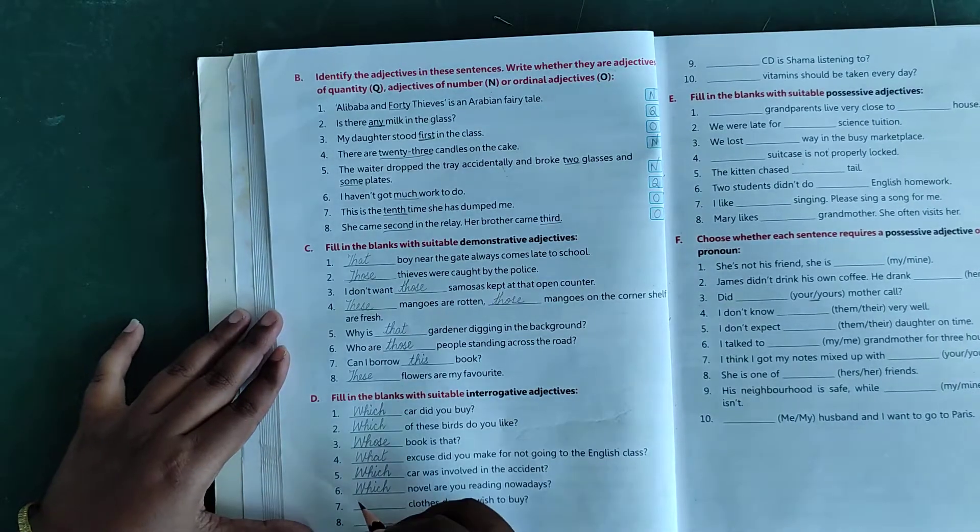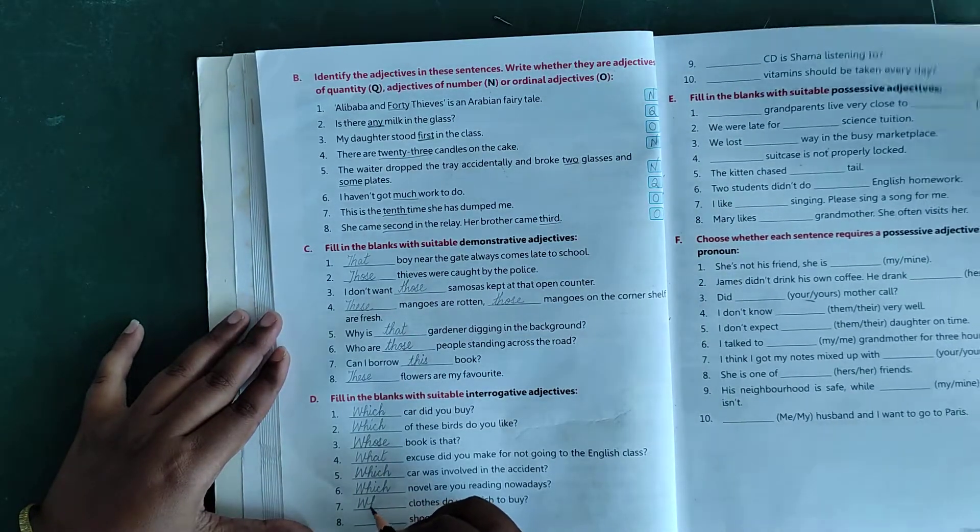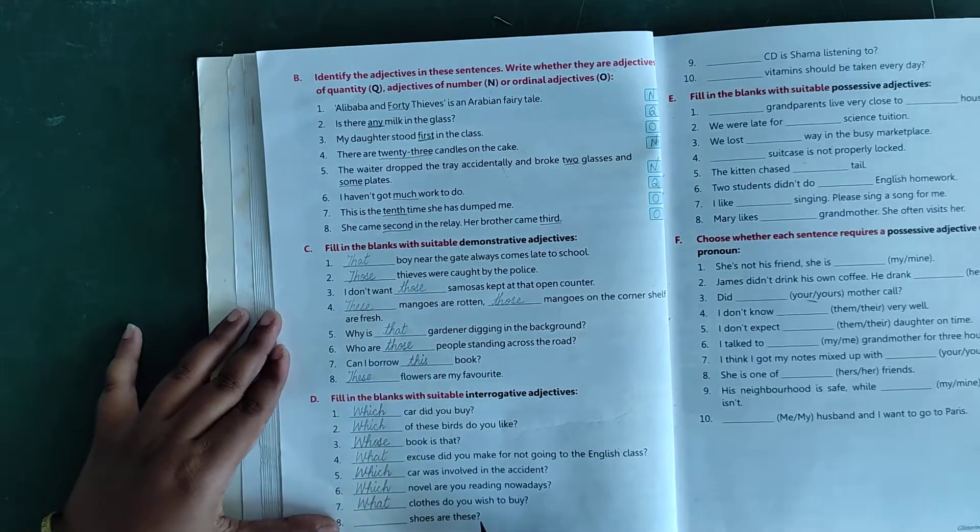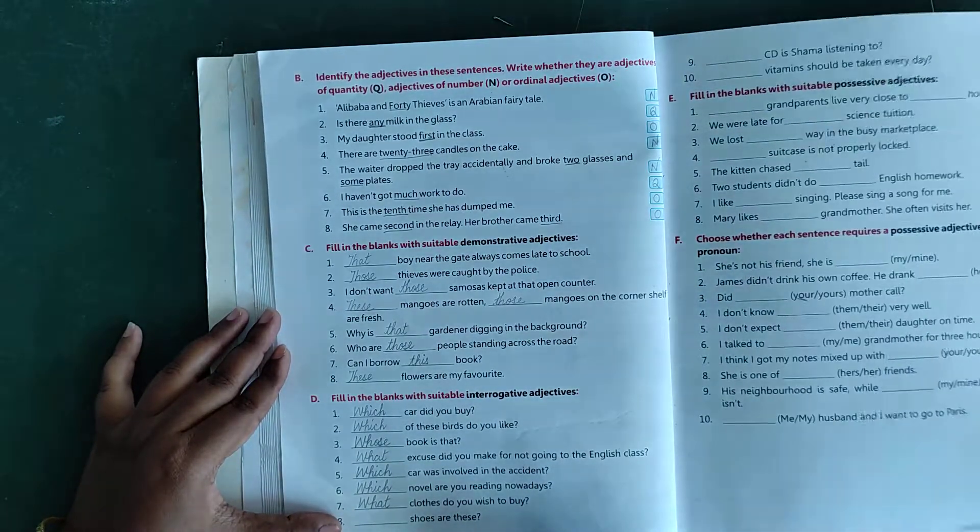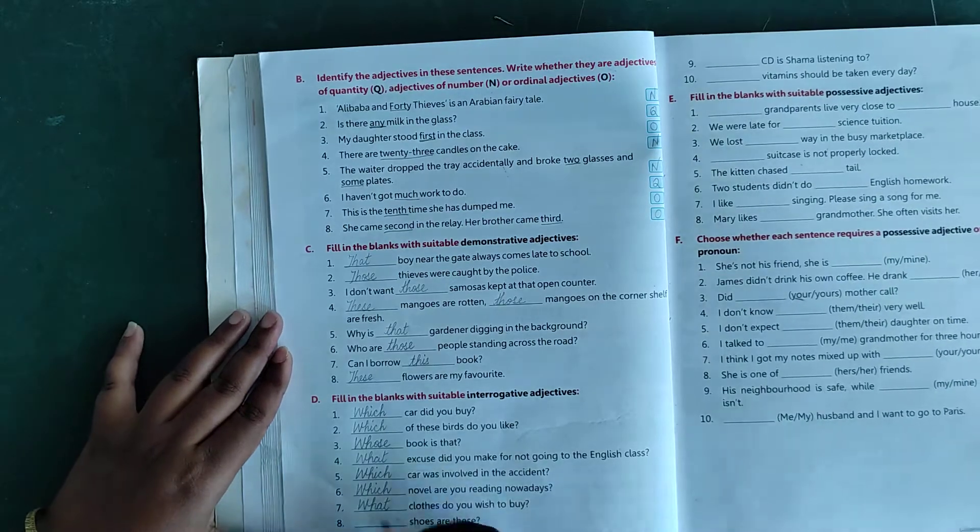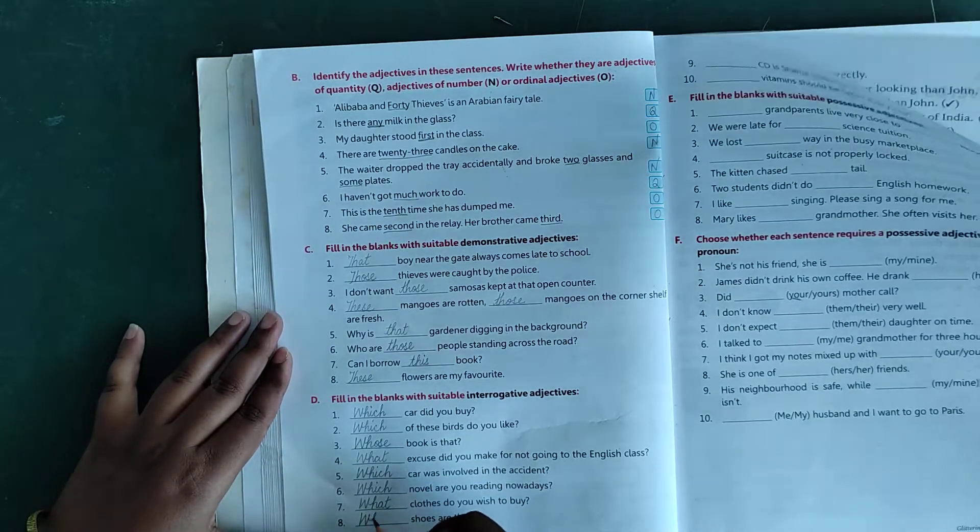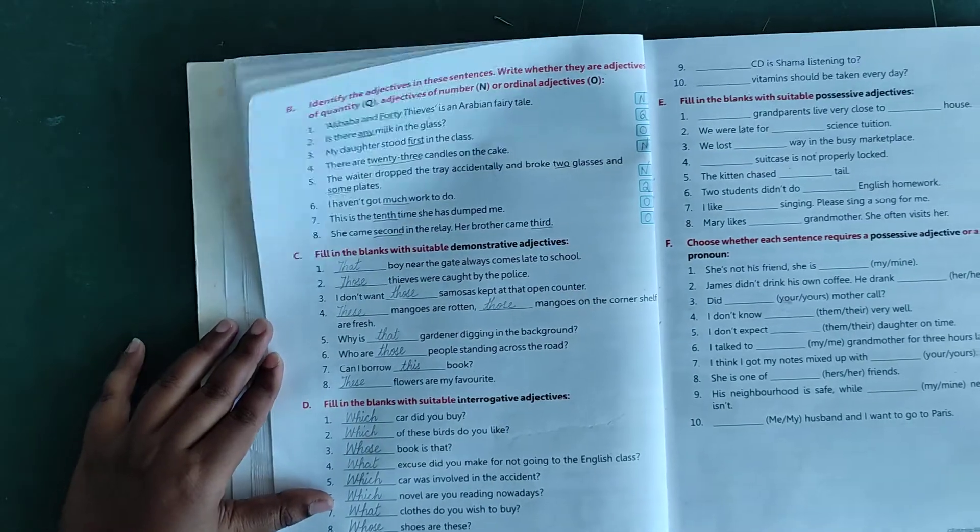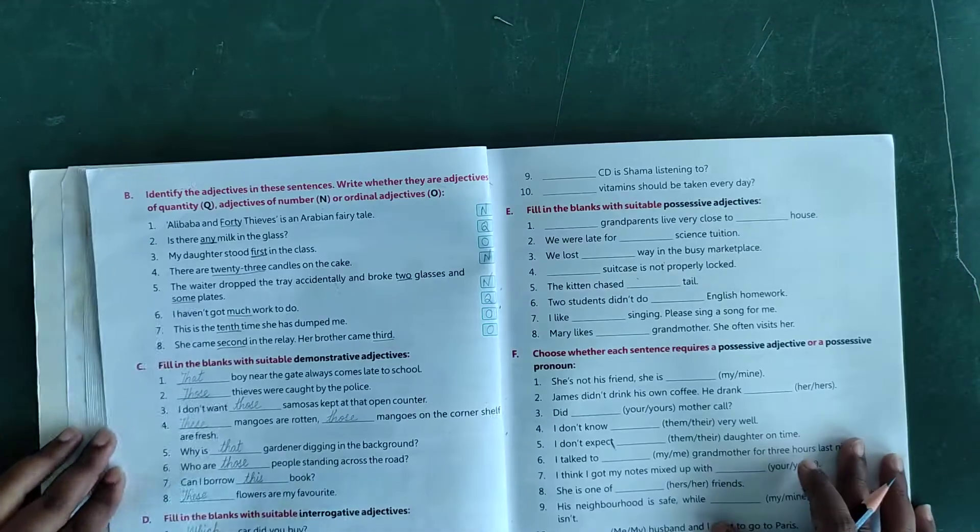Number 7: dash clothes do you wish to buy? What clothes do you wish to buy. Number 8: dash shoes are these? Whose shoes are these.